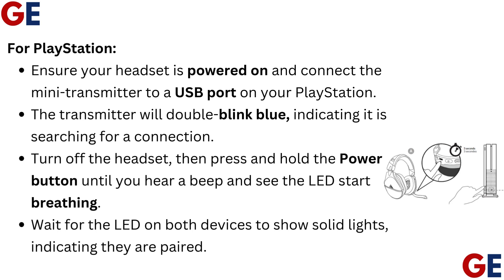For PlayStation, ensure your headset is powered on and connect the mini transmitter to a USB port on your PlayStation. The transmitter will double blink blue, indicating it is searching for a connection. Turn off the headset, then press and hold the power button until you hear a beep and see the LED start breathing. Wait for the LED on both devices to show solid lights, indicating they are paired.